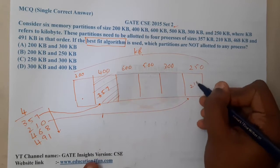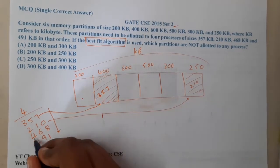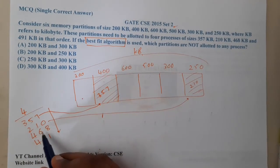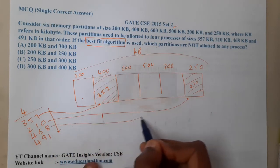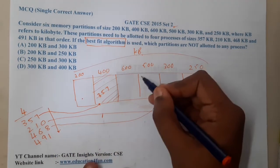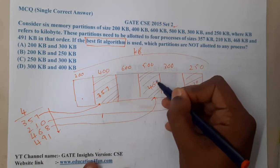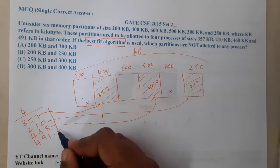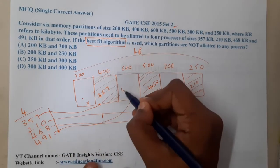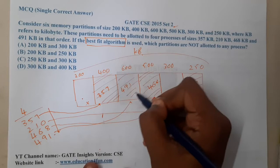Similarly, 468 will take place in 500 because that is the nearest value. When it comes to 491, it cannot fit here and cannot fit here, so the only chance is 600. So 491 will fit here.